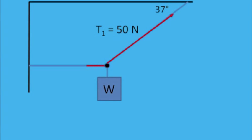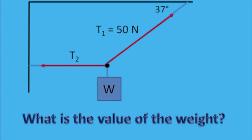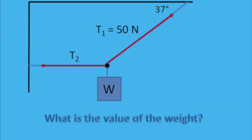The other string that is horizontally pulling into the wall with that tension, we'll call T2. And the problem asks, what is the value of the weight? All we're given is the one tension and the angle of 37 degrees.